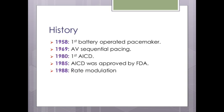The history of CIEDs started in 1958, when the first battery-operated pacemaker was invented. In 1969, AV sequential pacing was first tried. The first automated internal cardioverter defibrillator was first used in the 1980s and received FDA approval in 1985. In 1988, rate modulation was added to pacemakers.